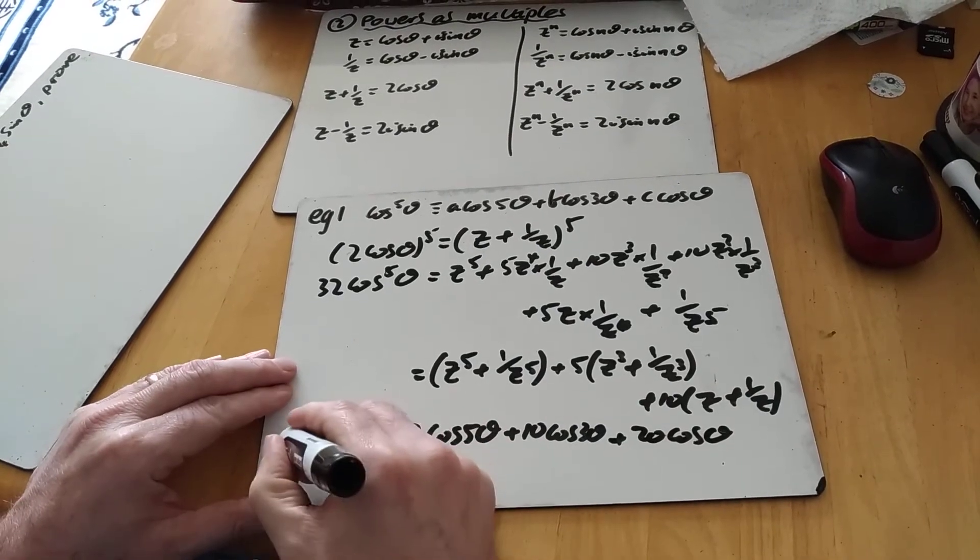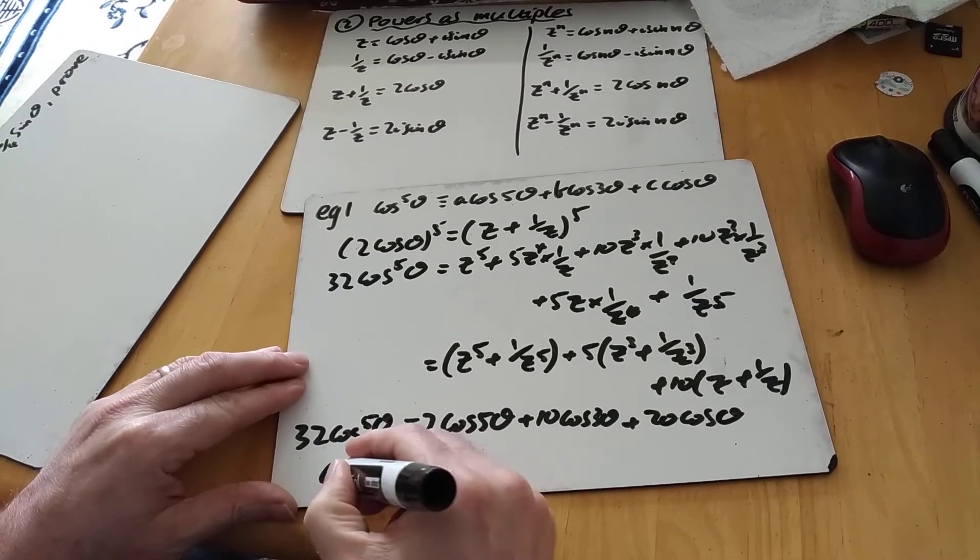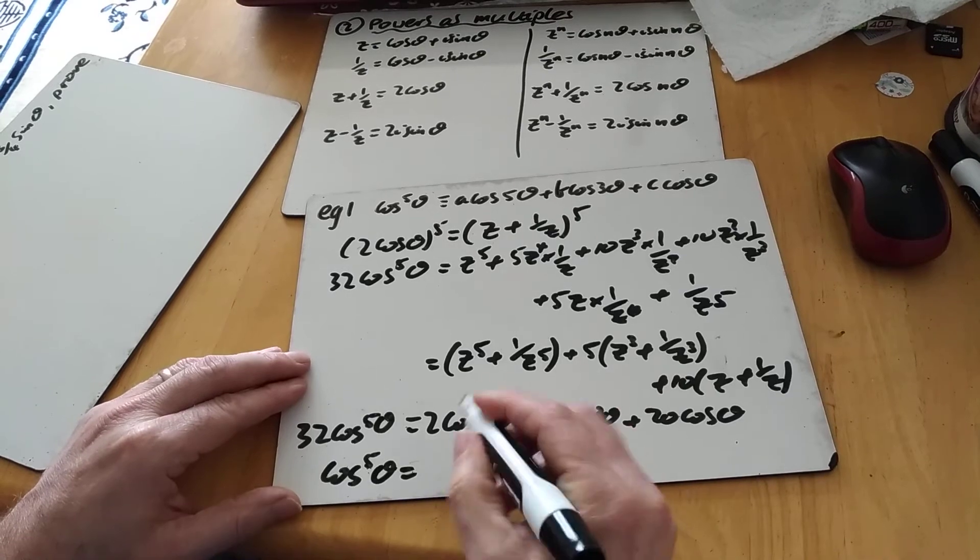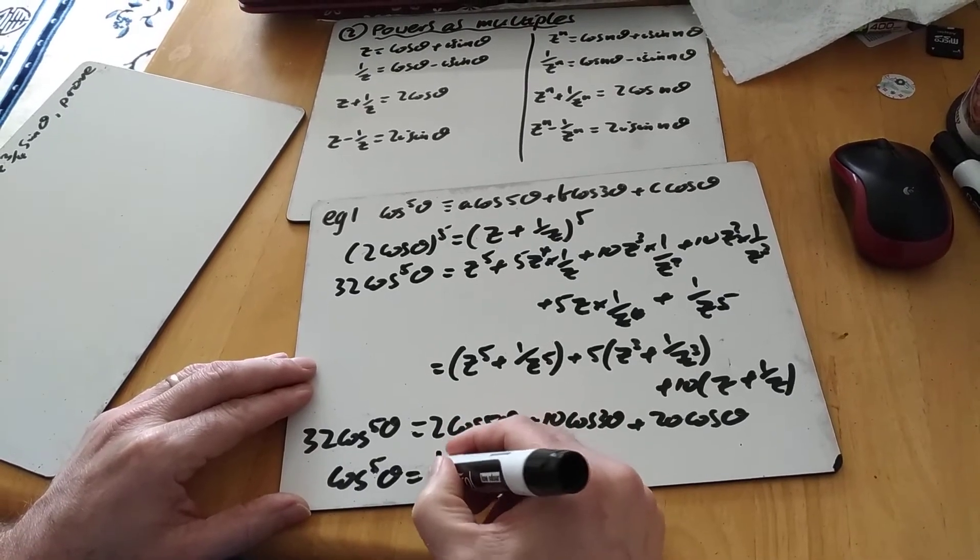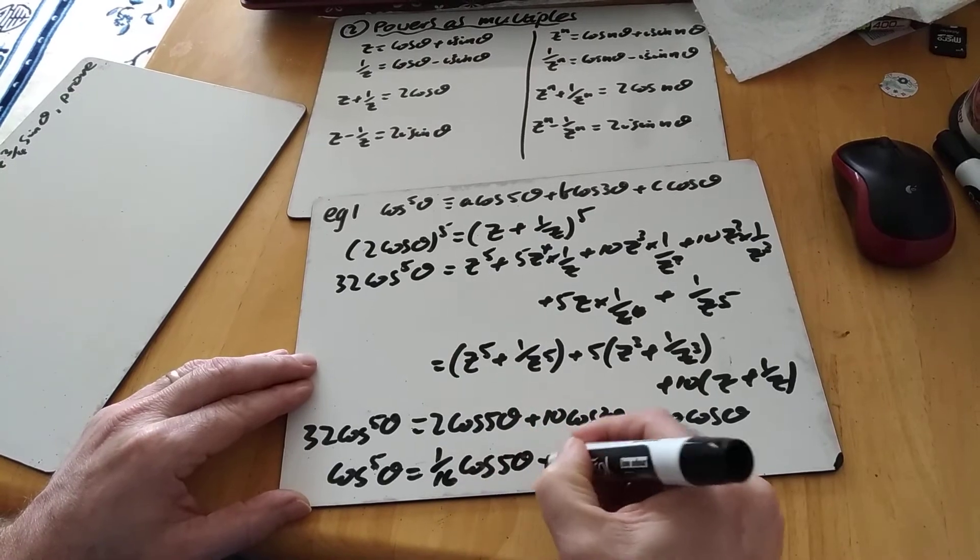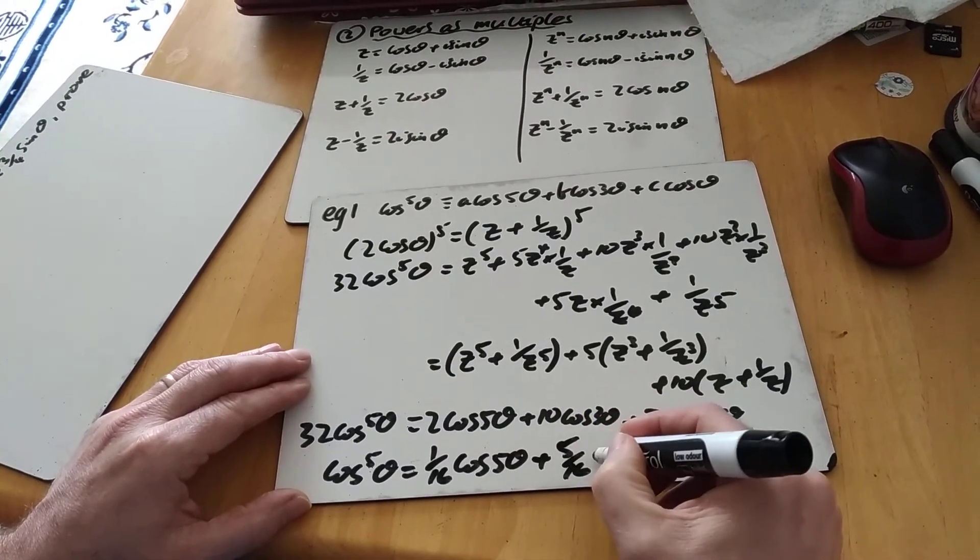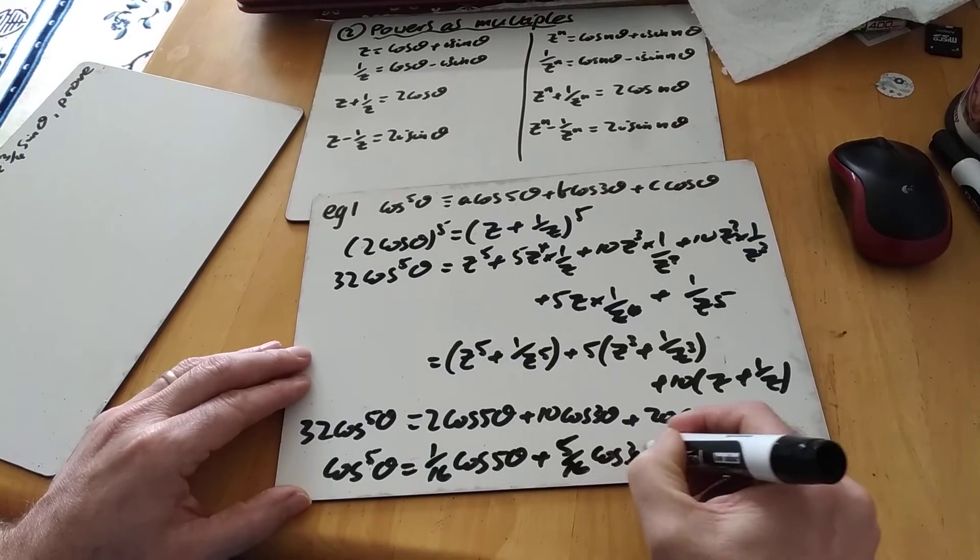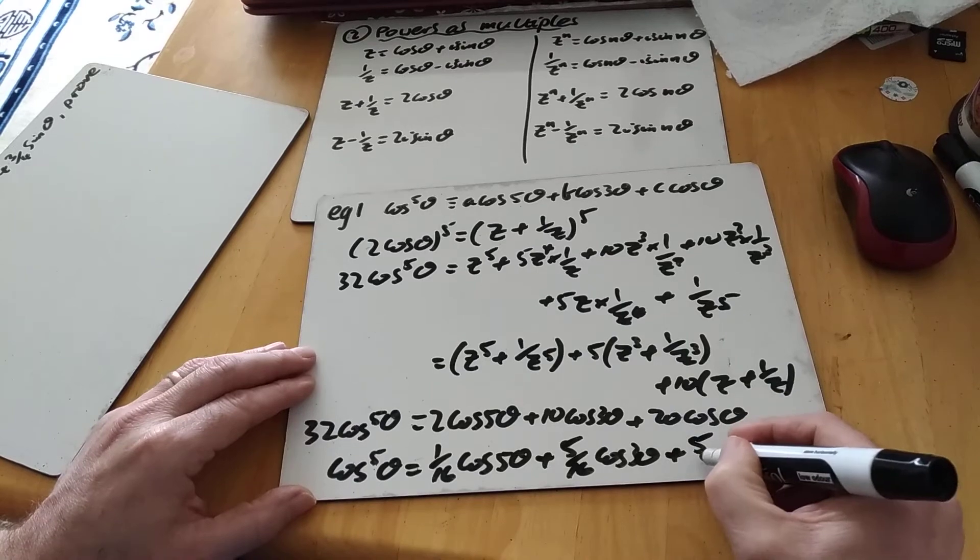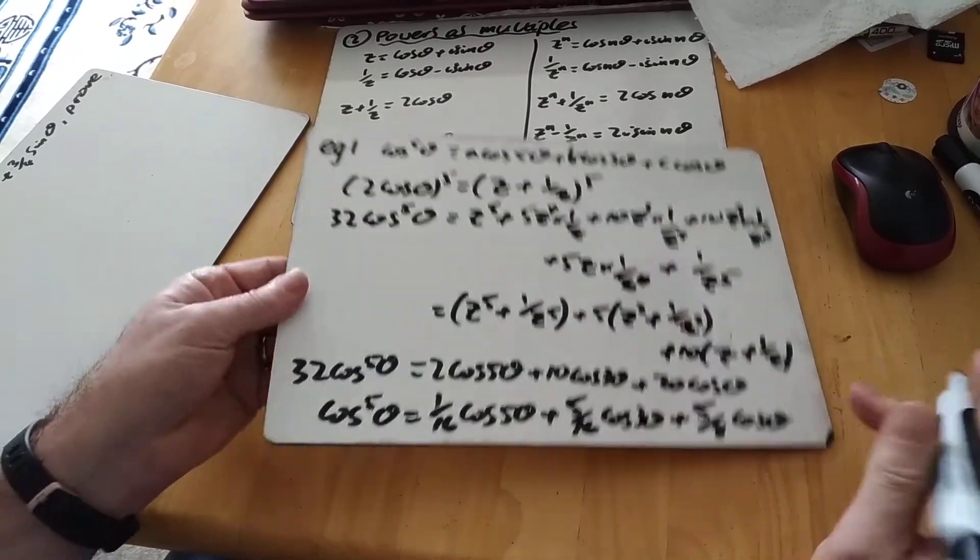And we're nearly there because that's 32 cos to the power of 5. So cos to the power of 5 then is all that lot over 32. So 2 over 32, 1 over 16 cos 5 theta. 10 over 32, 5 over 16 cos 3 theta. And 20 over 32 is 5 over 8 cos theta.